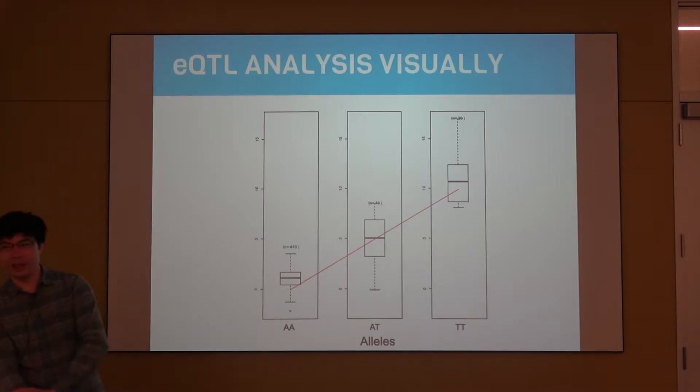The Y-axis here is gene expression, usually adjusted for all the covariates that I was mentioning, but generally it's a measure that will probably be explained more in depth in another video. There are measures like FPKM, TPM—those are the two major ones.